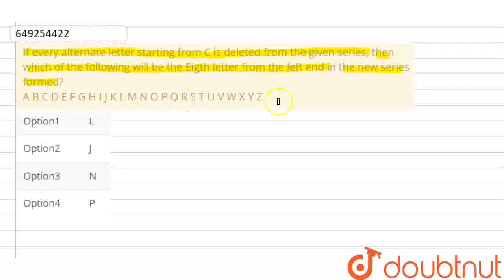So we have a series from A to Z. Starting from C, we delete every alternate letter. Then we need to find the 8th letter from the left end. This is our question.